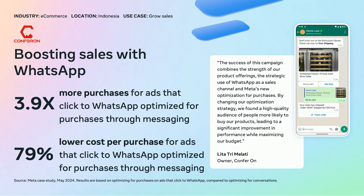Let's take a closer look at a case study from the e-commerce industry in Indonesia. The retailer Comfort On frequently runs ads that click to WhatsApp. Initially, they optimized for conversations, which led to a high volume of messages. However, they wanted to translate these conversations into actual sales. By shifting their optimization strategy to focus on purchasers through messaging, Comfort On discovered a significant boost in sales. This change allowed them to identify a high-quality audience more likely to buy their products, leading to improved performance and better budget utilization.